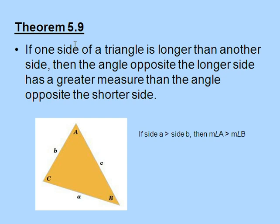Theorem 5.9 states, if one side of a triangle is longer than another side, then the angle opposite the longer side has a greater measure than the angle opposite the shorter side.